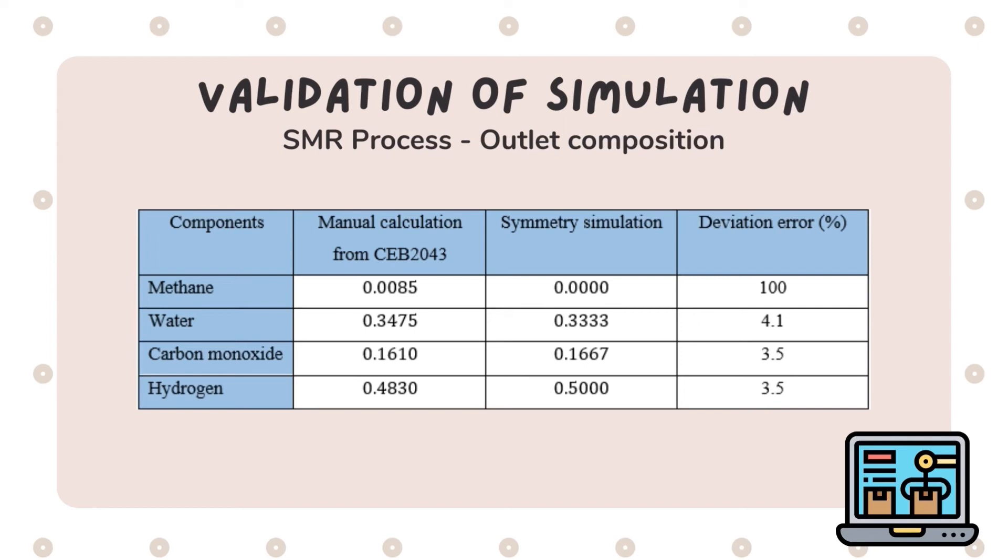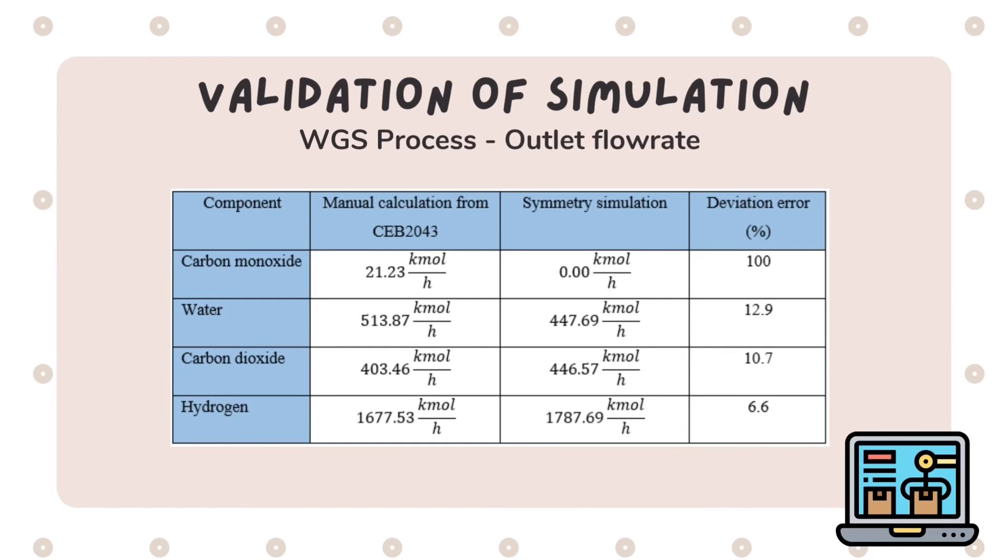For water gas shift reactor, the outlet flow rates of the reactor were studied. The deviation error calculated for water is 12.9%, followed by carbon dioxide 10.7% and hydrogen 6.6%. The deviation error for carbon monoxide is 100% since it is the reactant for the reaction and were assumed to be fully consumed in the Symmetry simulation.